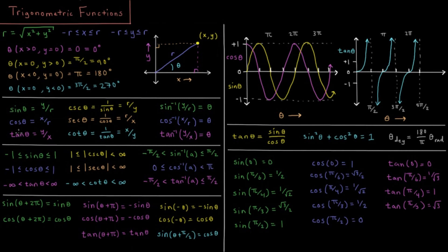Those are the three basic trigonometric functions. We can also define inverses of these functions. We can define r over y, hypotenuse over opposite, to be the cosecant — 1 over sine. The secant we can define as 1 over cosine, or r over x. And the cotangent we can define as 1 over tangent, or x divided by y.